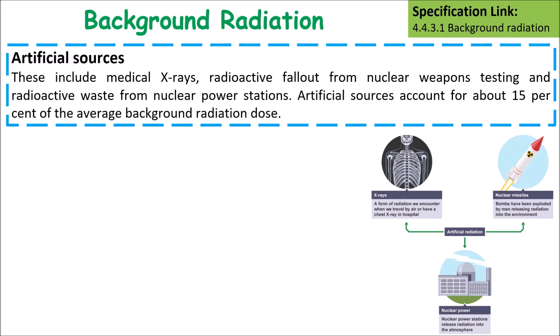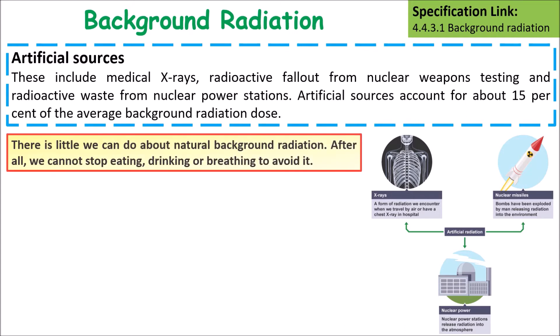Artificial sources of background radiation include X-rays, radioactive fallout from nuclear weapons testing, and radioactive waste from nuclear power stations. Artificial sources account for about 15% of the average background radiation dose.